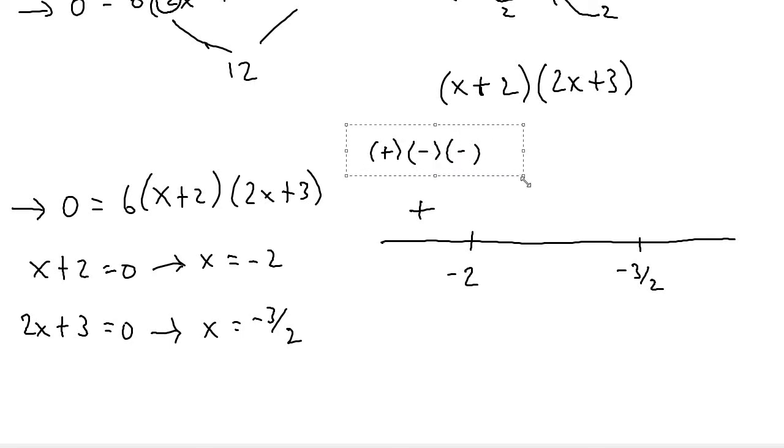Now between negative 2 and negative 3 halves, I can plug in negative 1.75, or negative 7 over 4. And when I do that, I'll get positive times another positive. And when I plug in negative 7 over 4 to 2x plus 3, I'll get a negative number. So a negative times a positive would then be a negative. So I'll put a negative sign down here.